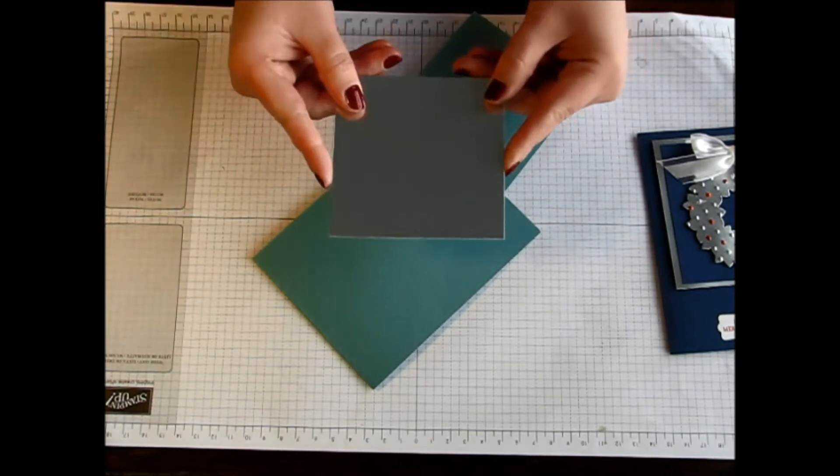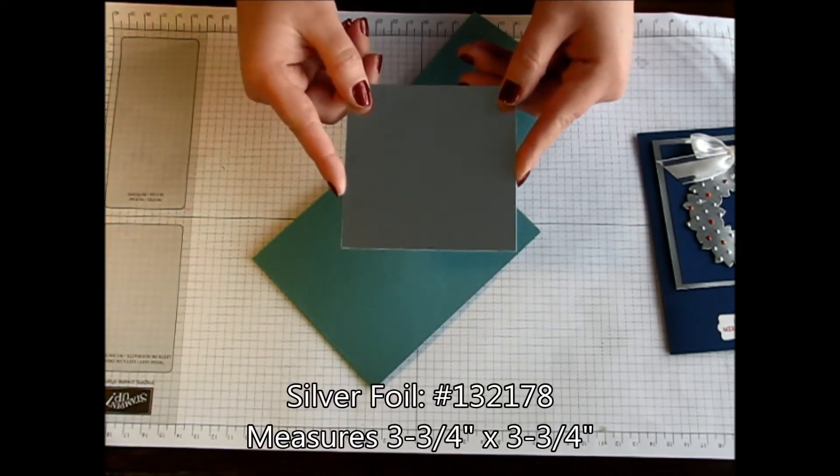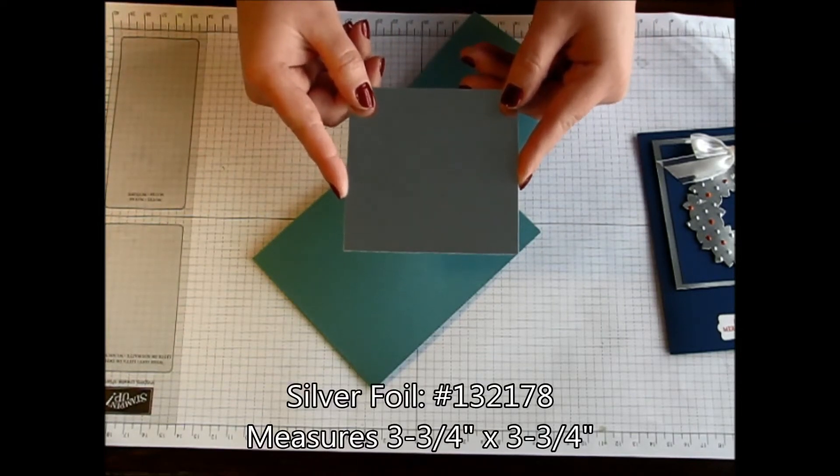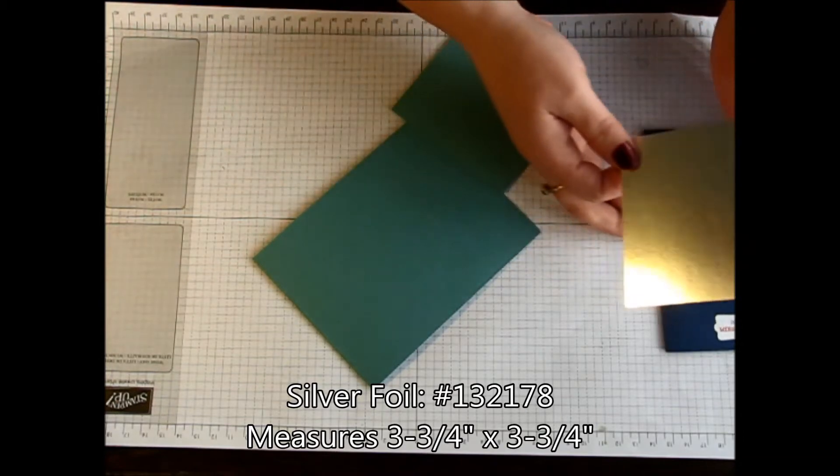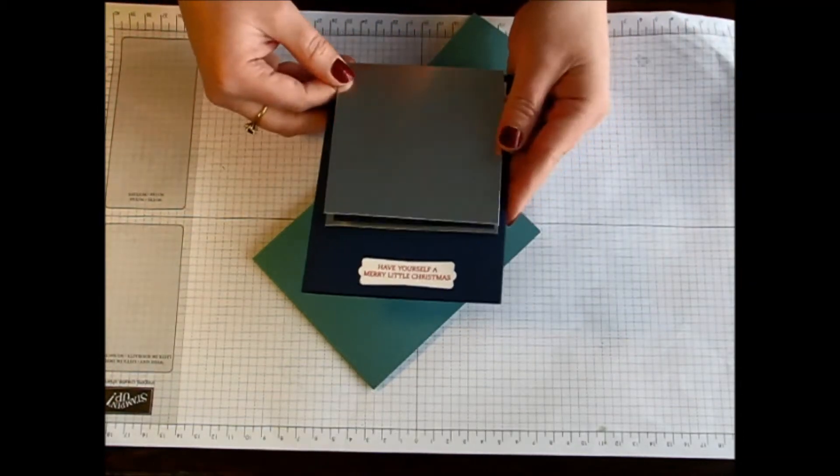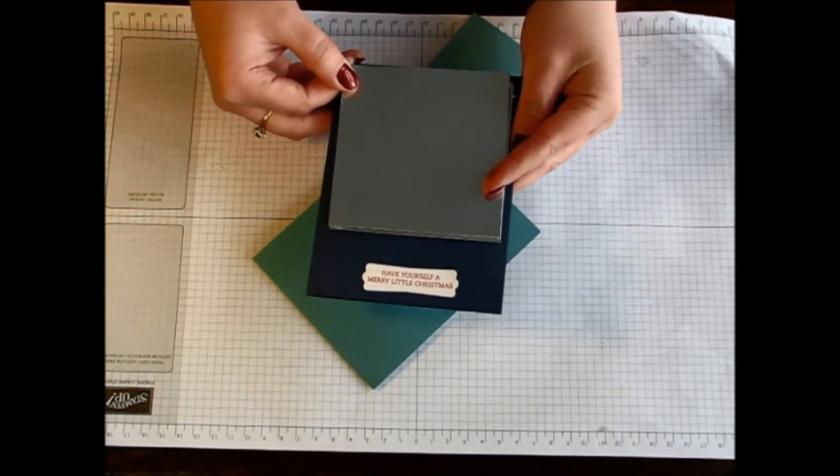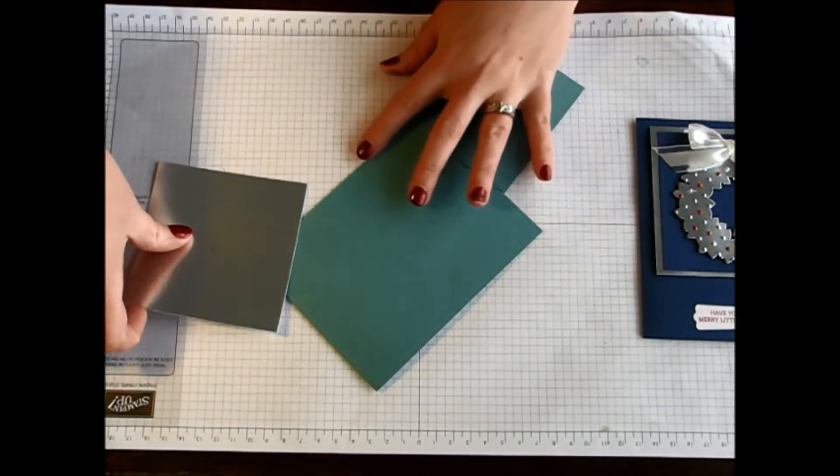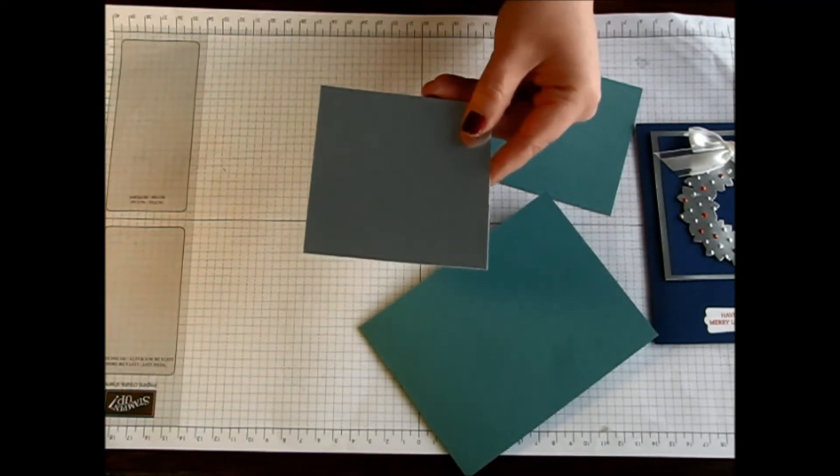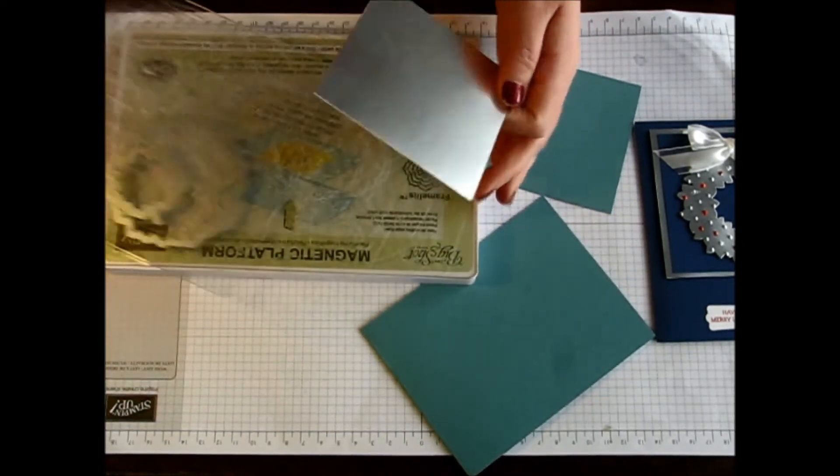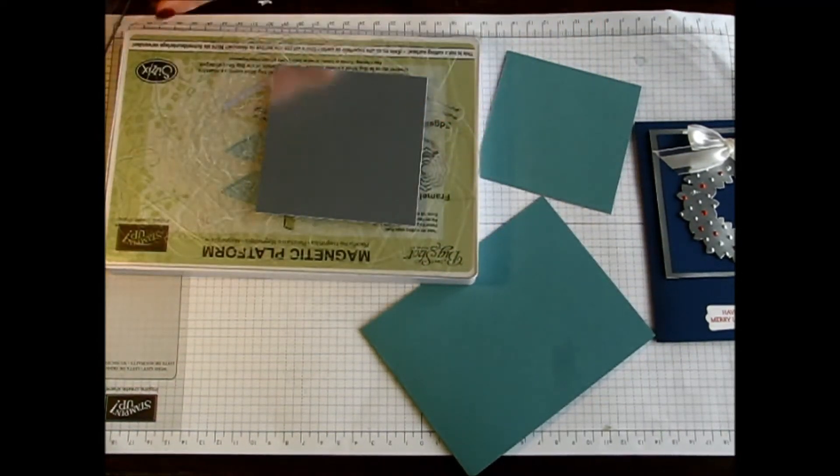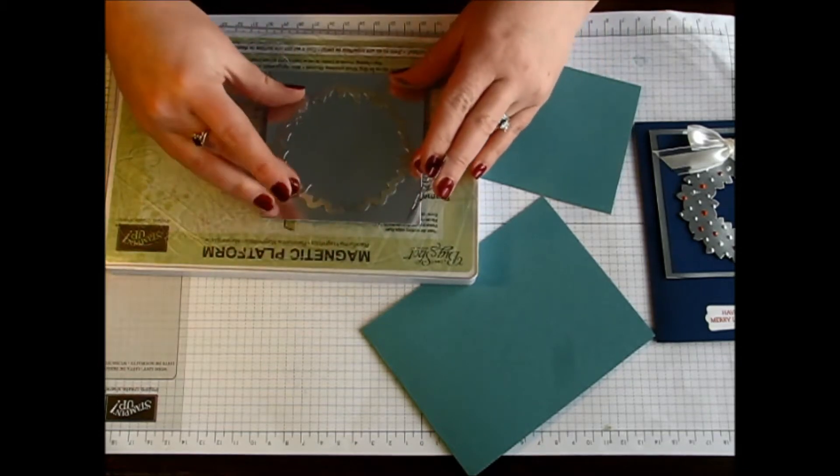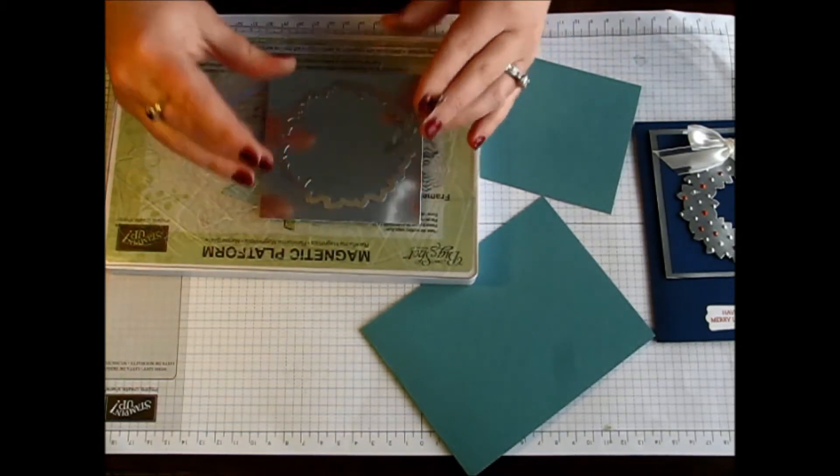I have a piece of silver foil. This measures three and three quarters by three and three quarters. If you notice, this is actually the same size as that background square piece that I used to layer right here. I will bring in my magnetic platform.